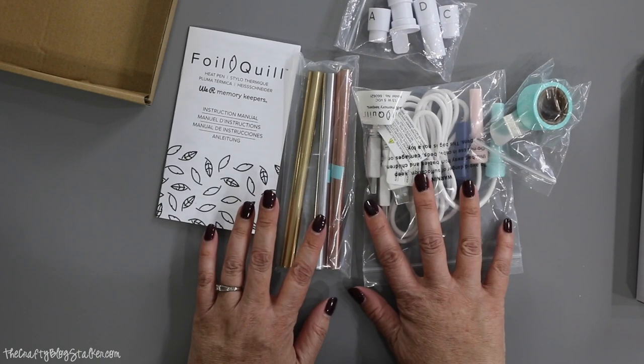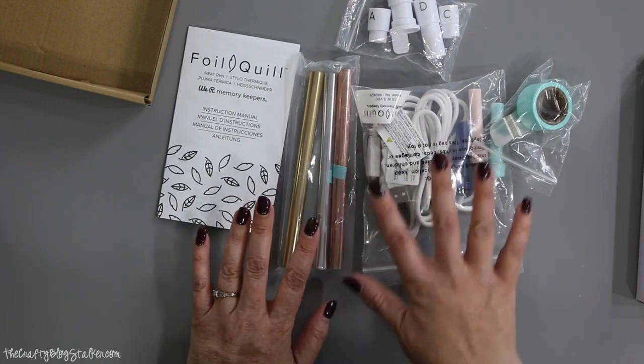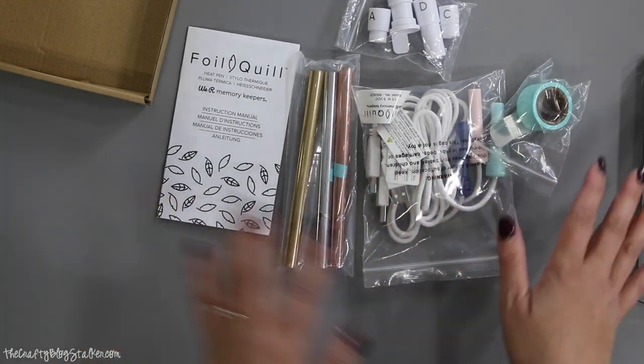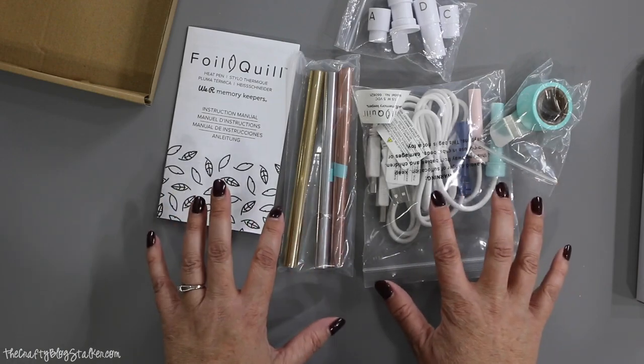These are our little rolls of foil. So we've got a silver, a gold, and like a rose gold or copper. So that is everything that comes in the kit. Now, I'm going to be using this with my Cricut Maker.